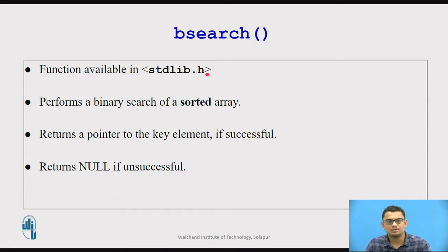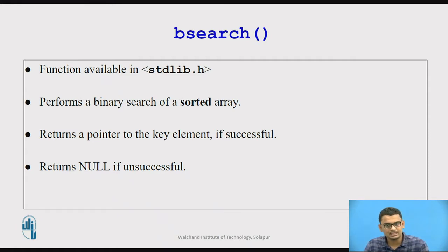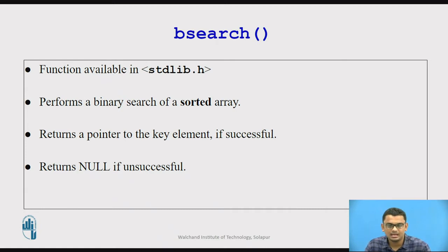This function returns a pointer to the key element if successful — that means if the key element we need to search is available in the array. If the key element is found, it returns a pointer to that element. If the element is not found, the function returns a null pointer.